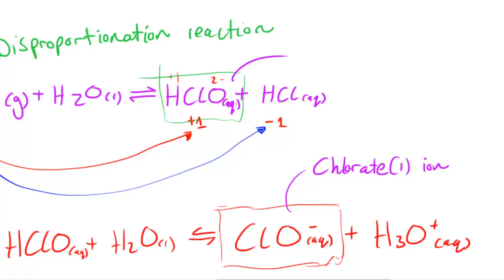And this has two names. The first name is chloric acid, and we need to indicate the oxidation number of the chlorine in this particular compound, so chloric(I) acid.